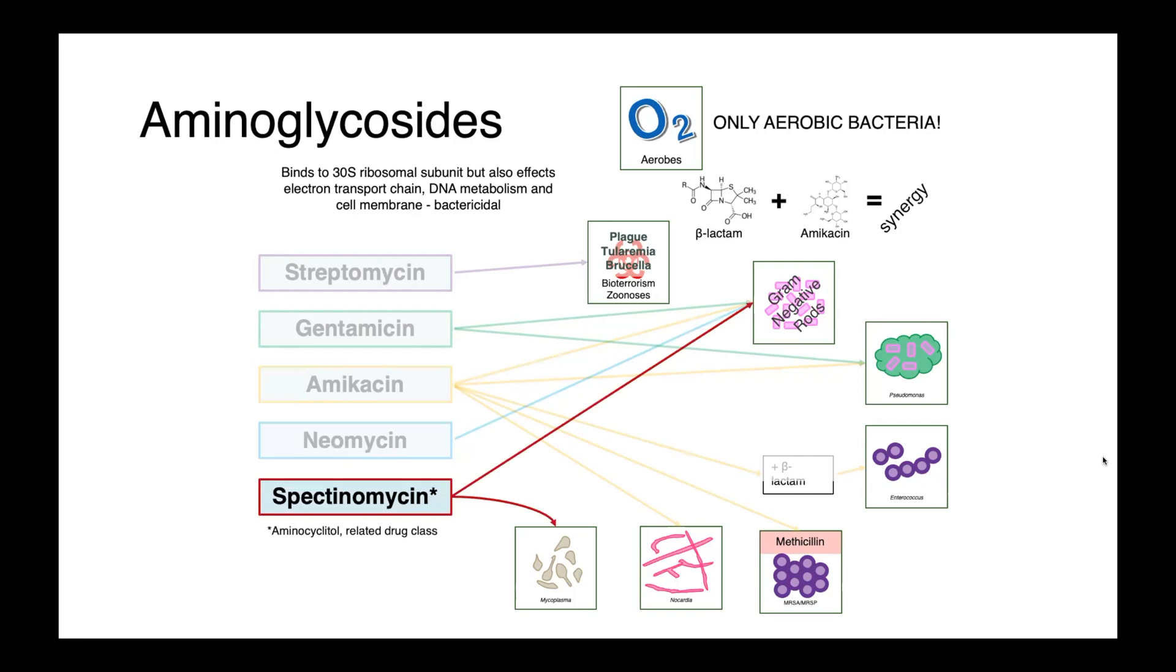Spectinomycin is actually not an aminoglycoside, but an aminocyclitol, which is a related and quite similar class of antimicrobials. It's active against both gram-negative rods and mycoplasma, and you may see this used in agricultural settings.